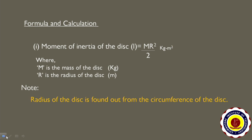Now let us see the calculation part. The first formula is for moment of inertia of the disk: I equals M times R² divided by 2, where M is the mass of the disk in kilograms and R is the radius of the disk in meters. The radius of the disk is found from its circumference — you measure the circumference using a thread, so that 2πR equals some value, and from that you find R, which is circumference divided by 2π.